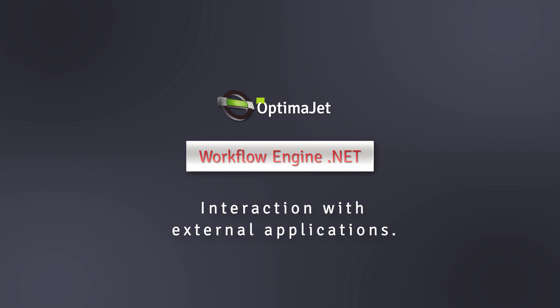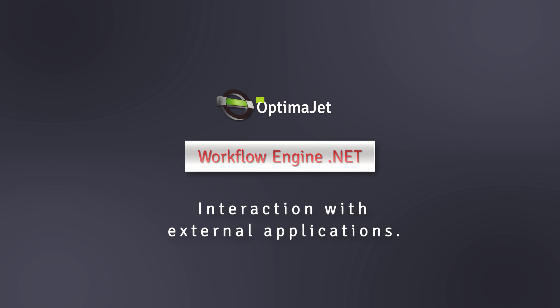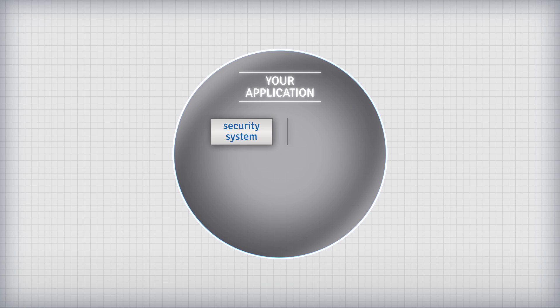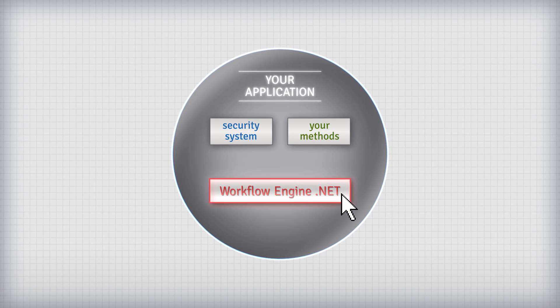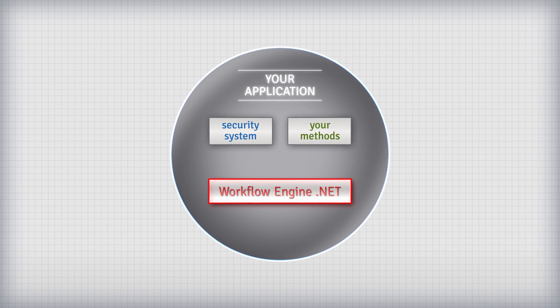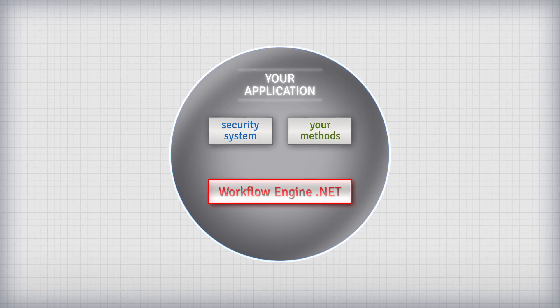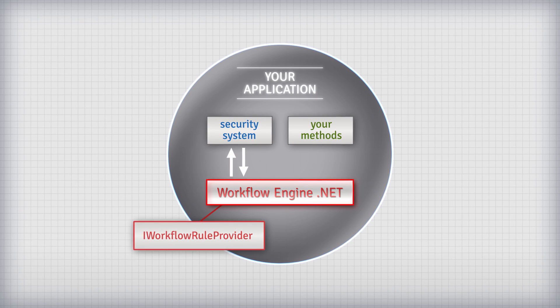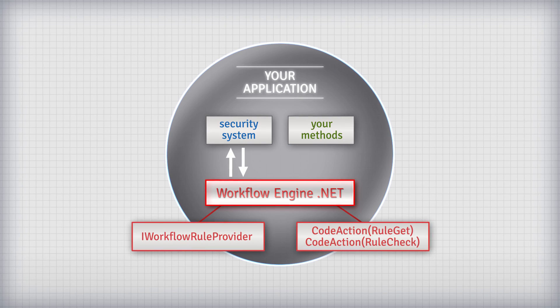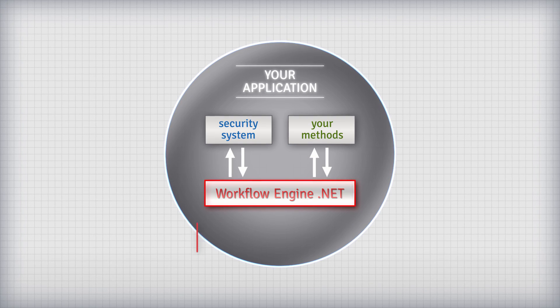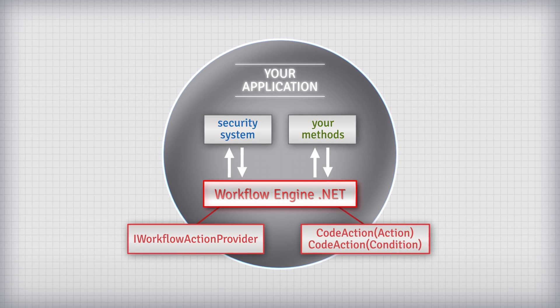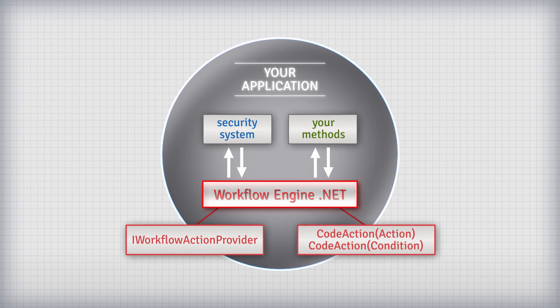Interaction with external applications. WorkflowEngine.net does not have a built-in security system, which means you can integrate it with any security system you have. This can be done via rules implemented in iWorkflowRuleProvider or in the designer using code action. To call an external method you can either use iWorkflowActionProvider or call it directly from the designer using code action.